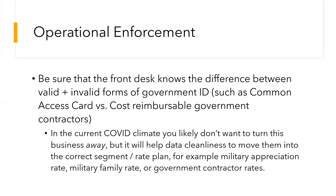Lastly, operational enforcement is a huge part of this. Make sure the front desk knows the difference between valid and invalid forms of government ID — for example, a common access card versus a cost-reimbursable government contractor. The front desk should be able to determine which of those qualifies for the per diem and which doesn't. With COVID going on, you probably don't want to be turning away cost-reimbursable government contractors or military family appreciation rates. But to help with data cleanliness, be sure to move guests into the correct segment or rate plan. If someone is asking for a government rate, don't just assume they're on official government travel — ask a few more questions and find out if a military appreciation rate or military family rate is a better fit.